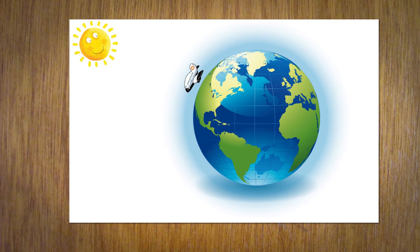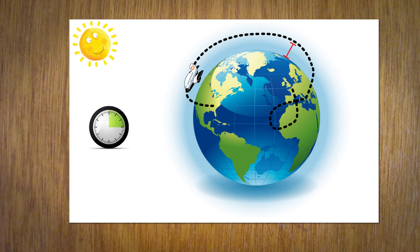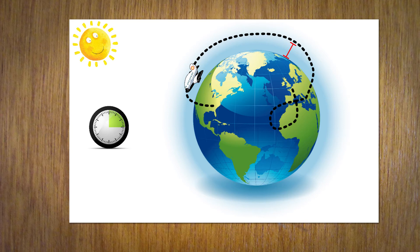In order to calculate the radiation dose on the plane, you need to know four things: the exact route of the flight, the altitude of the flight, the duration of the flight, and the prevailing solar activity.